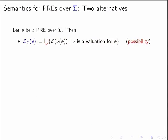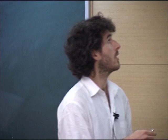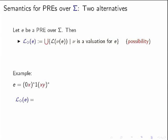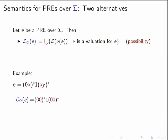Using valuations, there are two natural choices for semantics. The first is to take the union of all expressions resulting from applying all possible valuations — we call this the diamond or possibility semantics. For example, the possibility language of an expression is the union over all valuations: sending both variables to 0, sending x to 0 and y to 1, and so on.